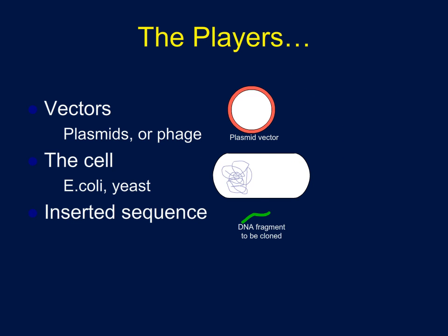You should know some specifics about the players in this process. Your expression vector has your gene of interest cloned into it by the Joint Center for Structural Genomics. You'll be using E. coli cells that are specific to this vector in terms of propagation and expression. Your inserted sequence is the gene of your protein of interest, and this inserted sequence is in the vector that is provided to you.